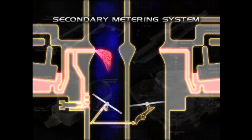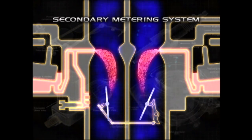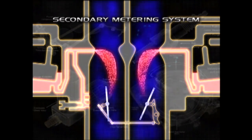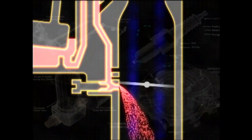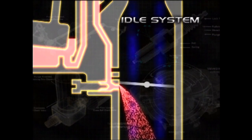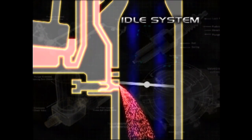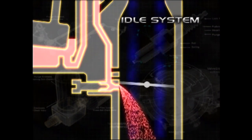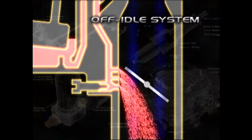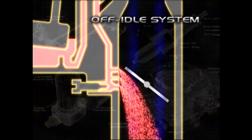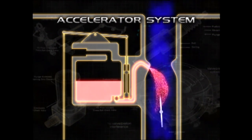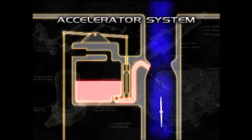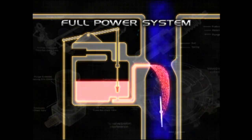Some two-barrel and all four-barrel carbs have a secondary main metering system that phases in when the throttle is at or near wide open — on a four-barrel carb, the rear two barrels are secondaries. When vacuum is low, the idle and off-idle systems are active. The idle system introduces fuel just below the throttle valve when it is closed, used at about 900 RPM or below. The off-idle system feeds fuel into the airstream when the throttle valve is partially open but not enough for the main metering system to operate. The accelerator system squirts fuel to compensate for the temporary lean condition when the throttle valve is being opened. The full power system richens up the fuel mixture during a full throttle condition.